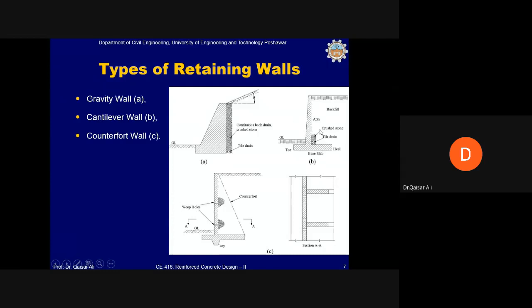For tall retaining walls, reinforced concrete retaining walls are used, which have much thinner sections compared to gravity walls. The cost of an RC retaining wall may be much higher than a gravity retaining wall. In a recent project for the CNW department, several types of retaining walls were proposed for different conditions — for heights up to 10 or 15 feet, stone masonry and plum concrete retaining walls were proposed. Plum concrete is a type of concrete where large boulders are placed inside a cement slurry grout.